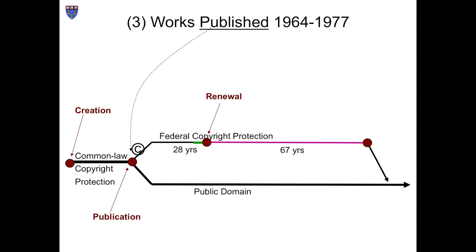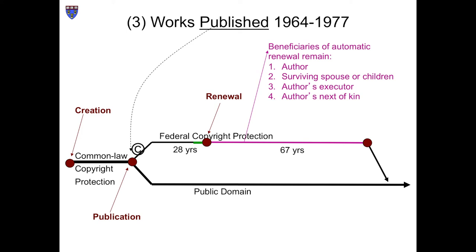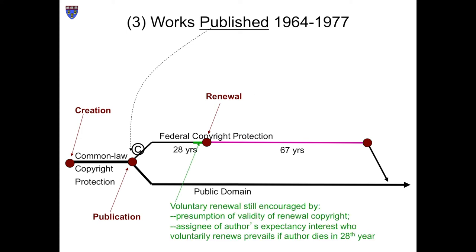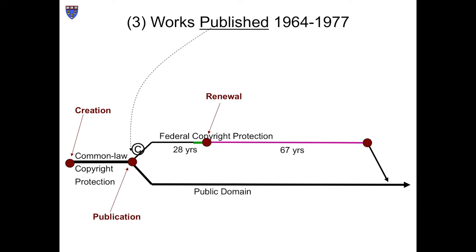Not so with respect to works first published between 1964 and 1977. These get the benefit of the change from voluntary renewal to automatic renewal. Who owns these copyrights? Presumptively the same persons who were eligible to apply for renewal under the previous regime. Just because these copyrights are subject to automatic renewal doesn't mean they cannot be voluntarily renewed, and the system contains some important incentives for voluntary renewal. The key point is that works in this third category have not yet fallen into the public domain. They will begin to do so in 2018, like their surviving older cousins.